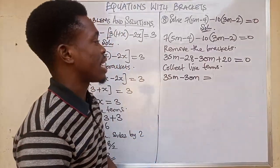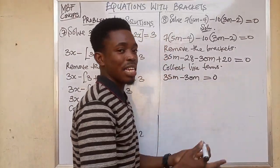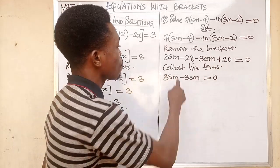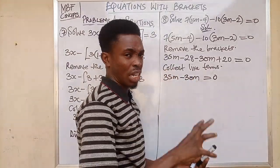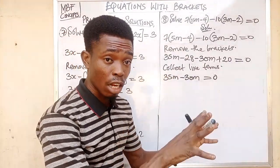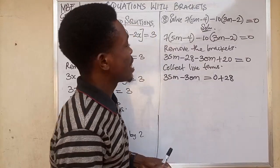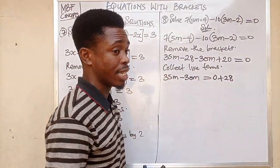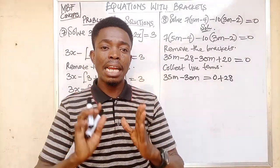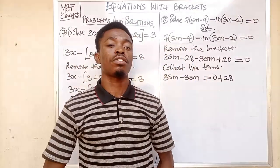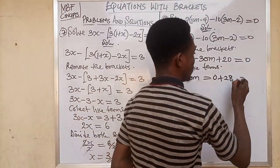On the right-hand side we start with zero. Then minus 28 crosses the equality sign — by rule number 3, it becomes plus 28. Next, plus 20 also crosses the equality sign — by rule number 2, a positive sign crossing the equality sign becomes negative — so it becomes minus 20. We have 35m minus 30m equal to 0 plus 28 minus 20.